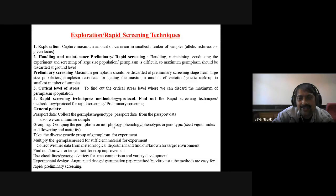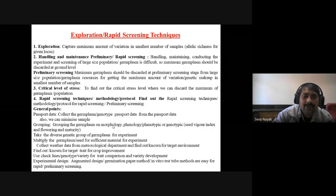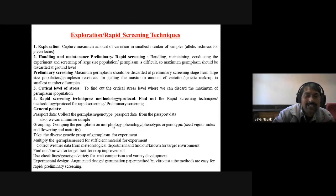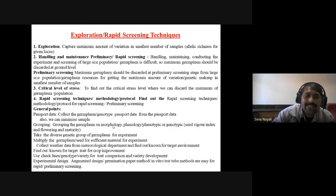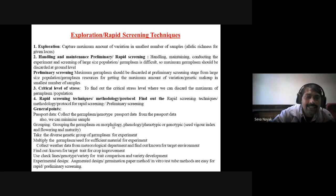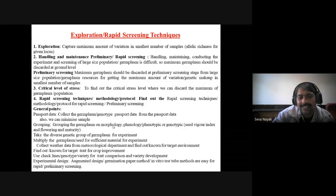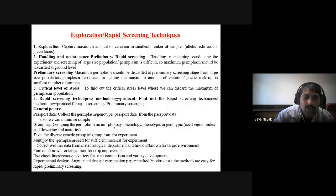Grouping: group germplasm by morphology, phenology, phenotypic or genotypic characters — seed weight, germination, flowering, and maturity shape. Before starting the experiment with around 200 germplasm, we should first group them, because one may be long-duration and another short-duration. If we impose stress for a certain period, the long-duration will extend and short-duration will escape the stress. This is not a good procedure. First group the germplasm by duration and then go for the experiment.